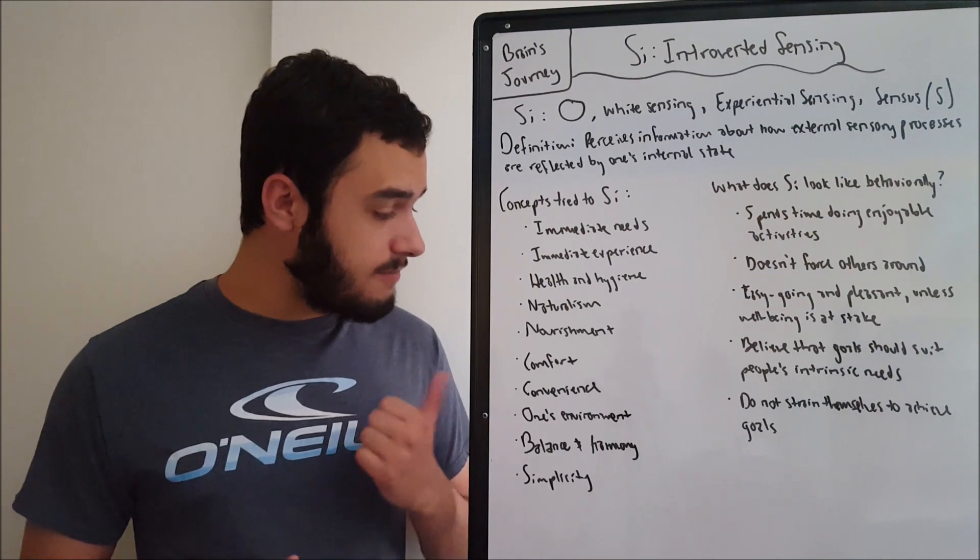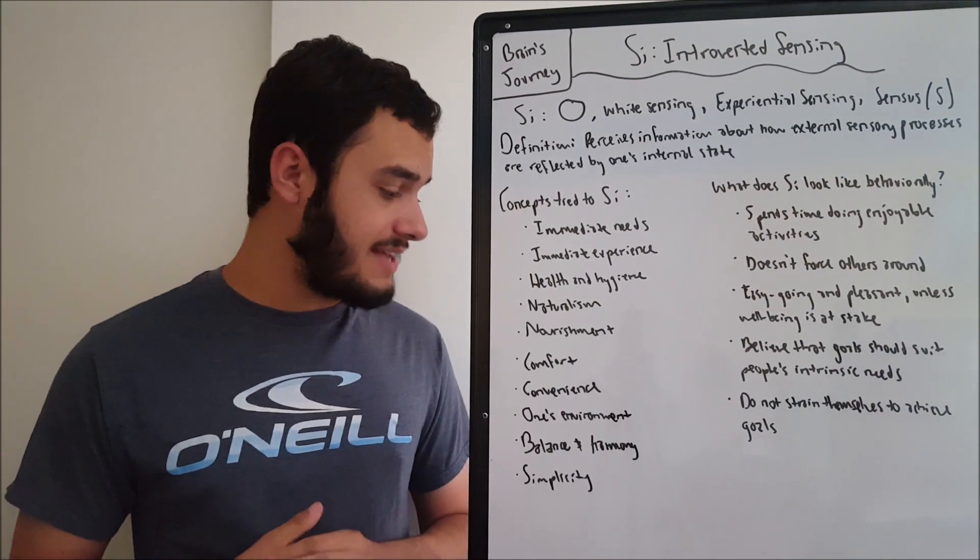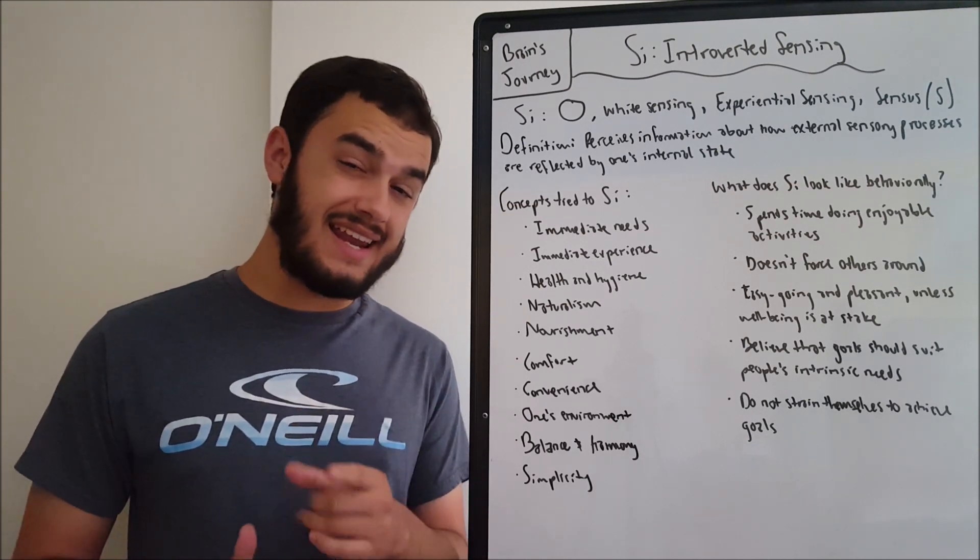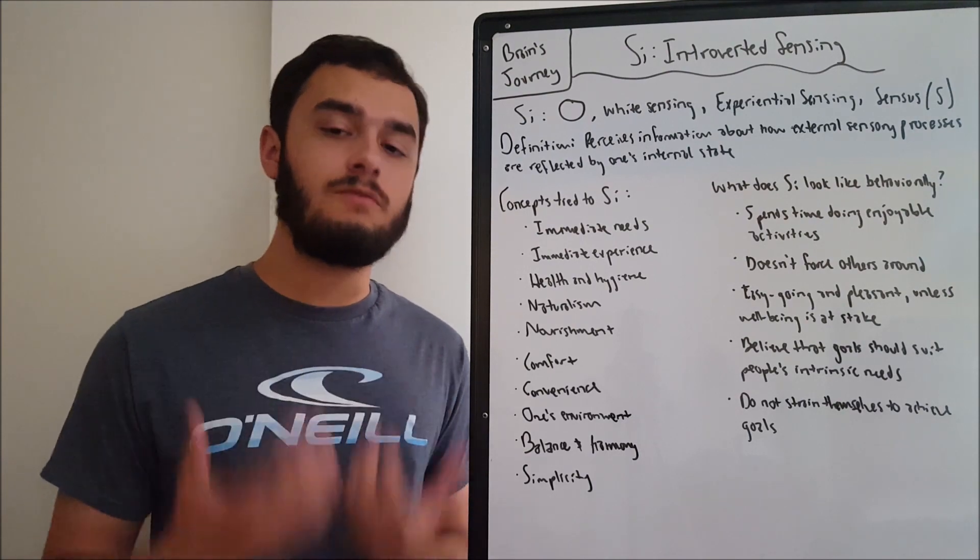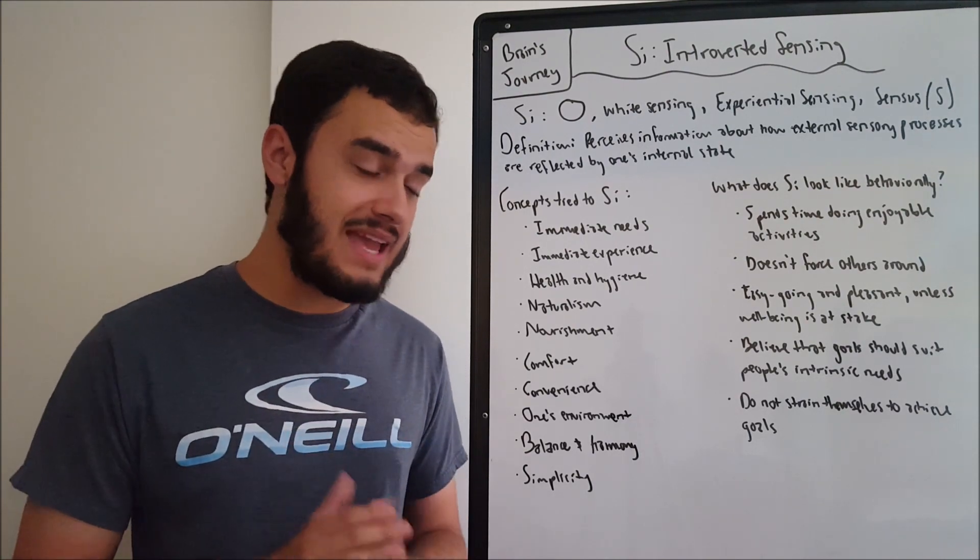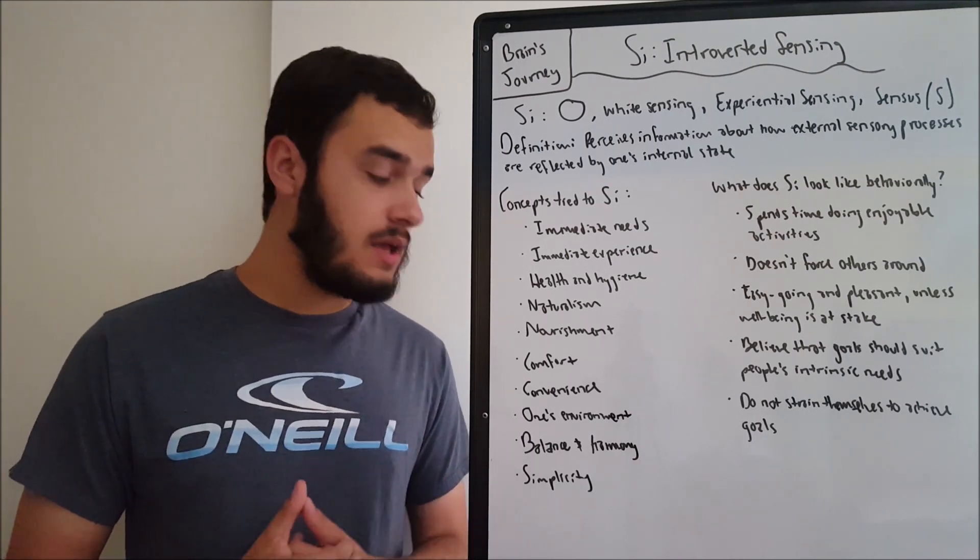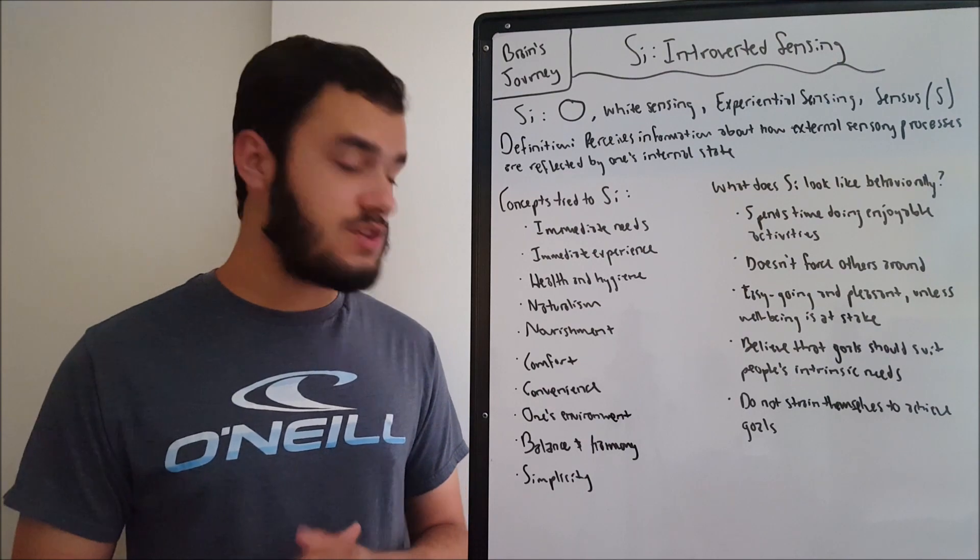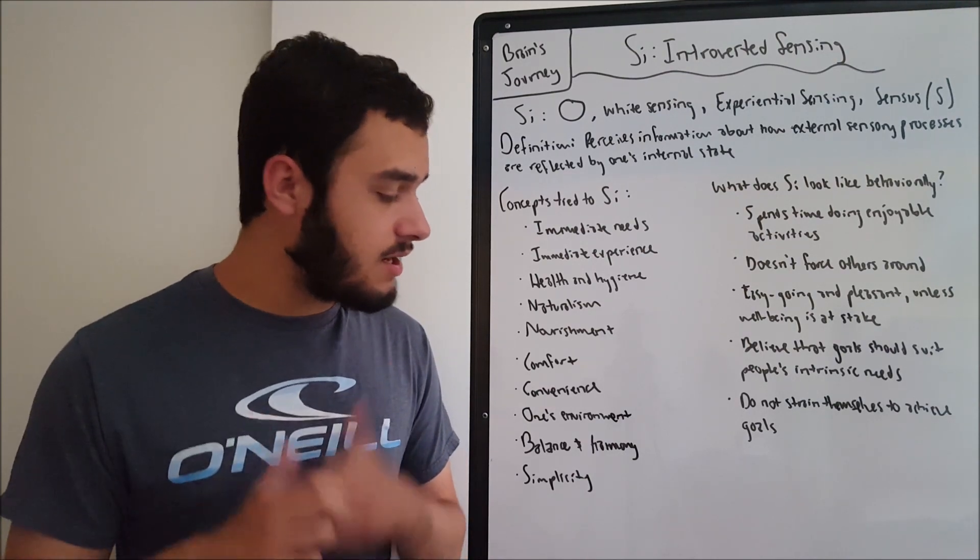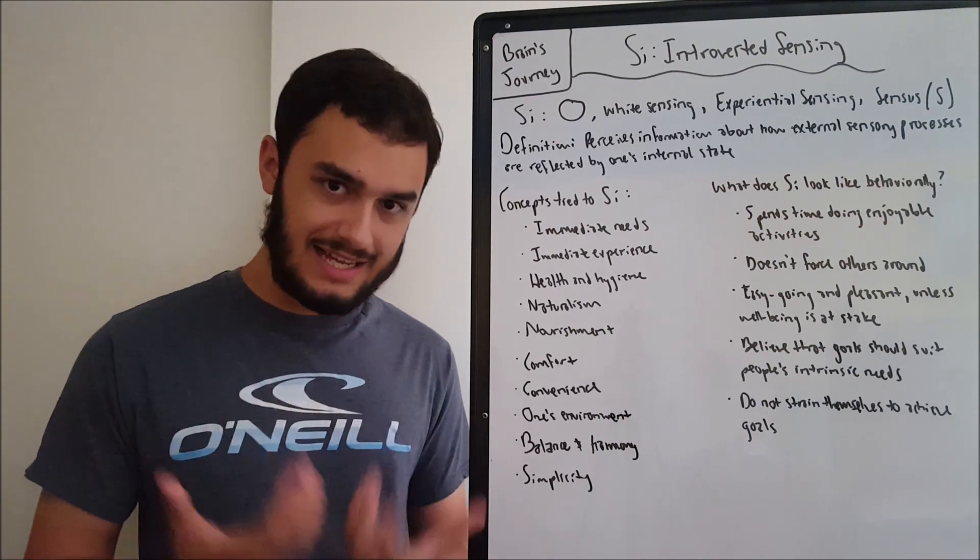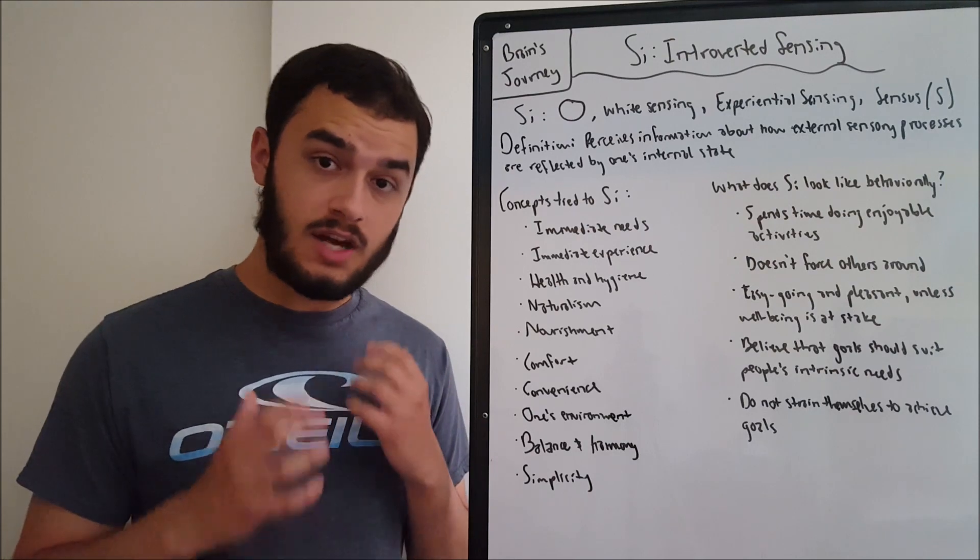Another thing we want to look at is comfort. Comfort is a big thing for SI users, or just SI valuing types. Comfort, whether something is comfortable or not comfortable, there's this distinction that's made, an effort to maintain a comfortable environment, leisure activities, things that are enjoyable for the mind and the body, things that can bring comfort, things that can bring satisfaction, pleasure. That's a big thing for SI, is the comfort in one's environment.